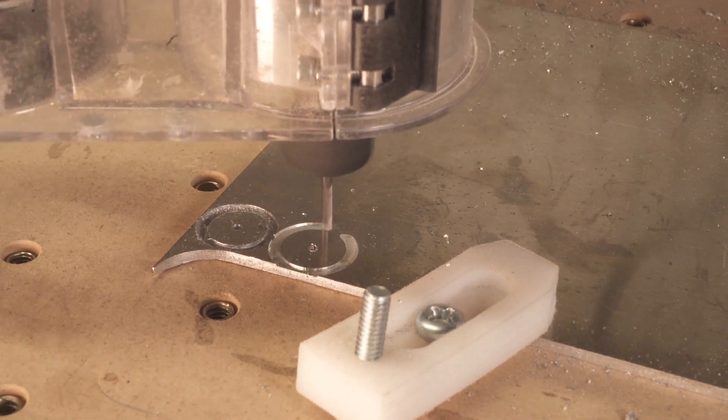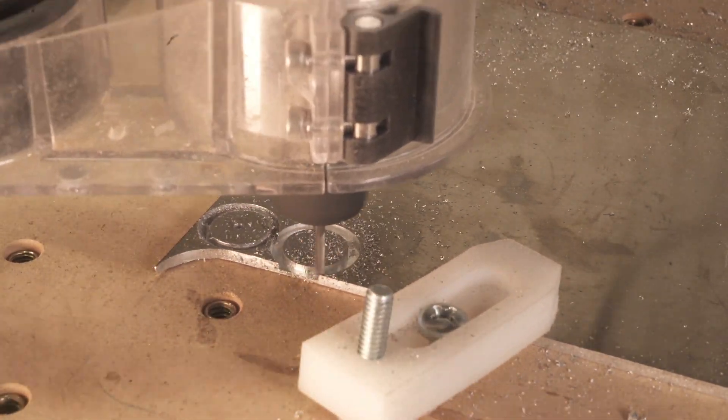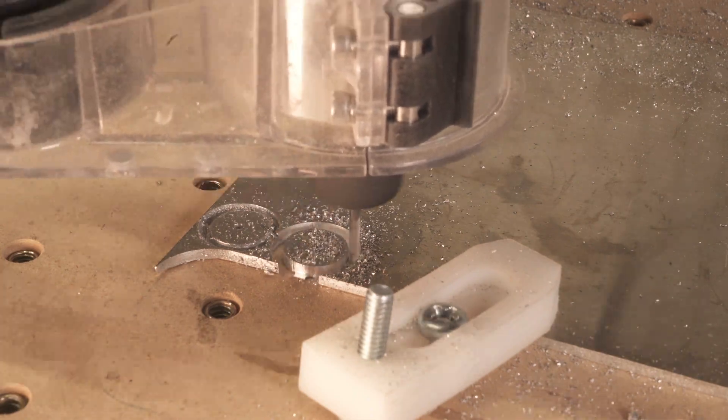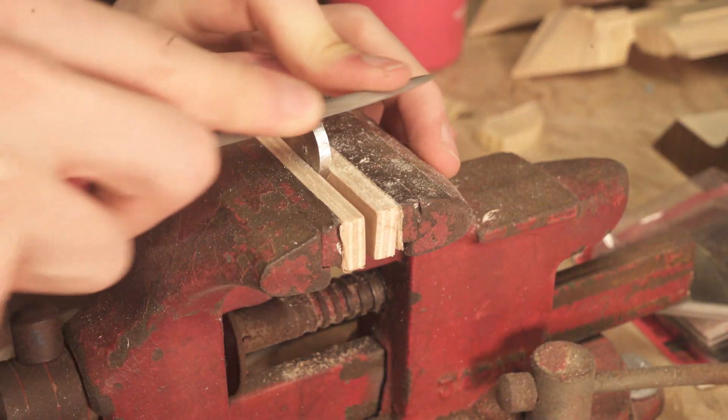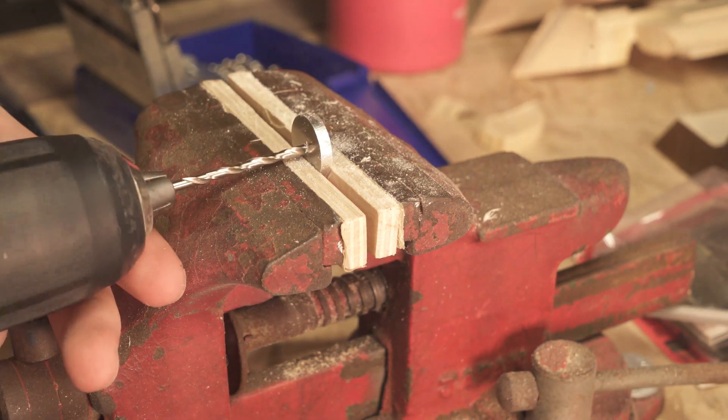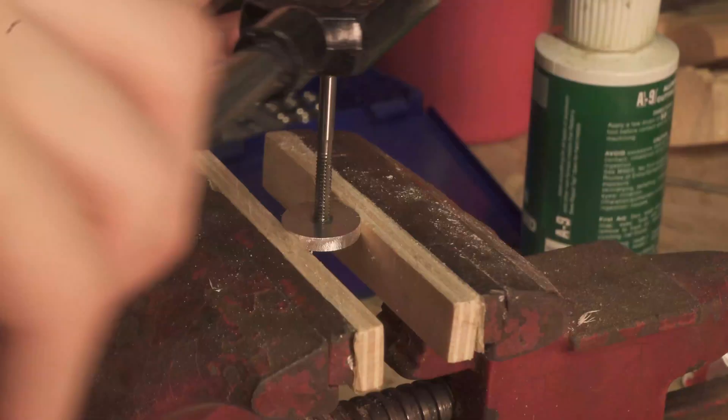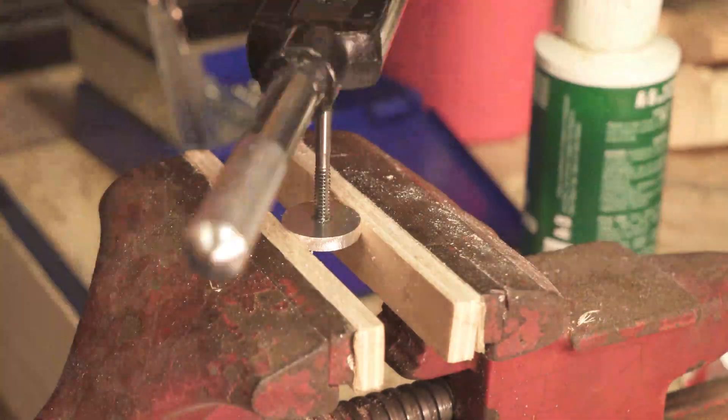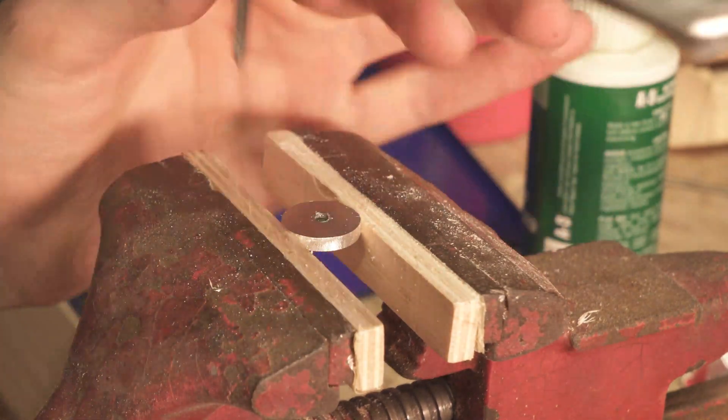Next, I started working on the bottom plunger for the air piston. Once the train is assembled, I'll have no way of accessing this part, so I decided to make it out of aluminum because then I can drill and tap a hole through the center and use threadlocker to stop the piston from coming loose after hundreds of smoke rings.